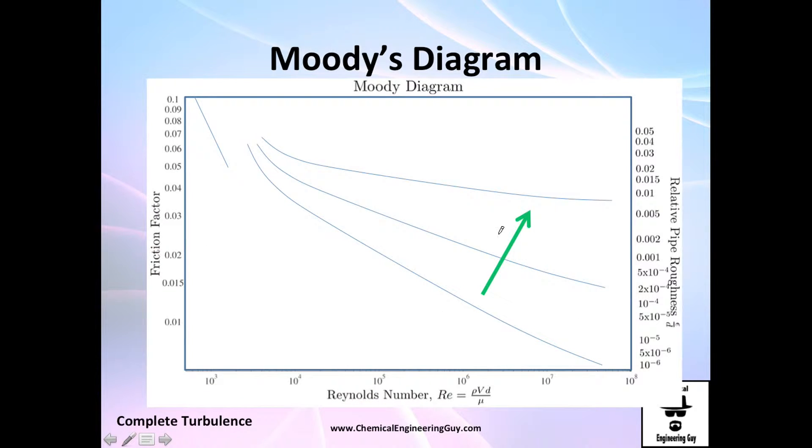The interesting part is when you start changing the roughness. Let's say you increase roughness, you start going up and up. These lines are for more roughness. For example, this one is for 0.01, this one is about 2 times 10 to the minus 4, and recall that this was very low, 10 to the minus 6, which is a perfect smooth pipe.